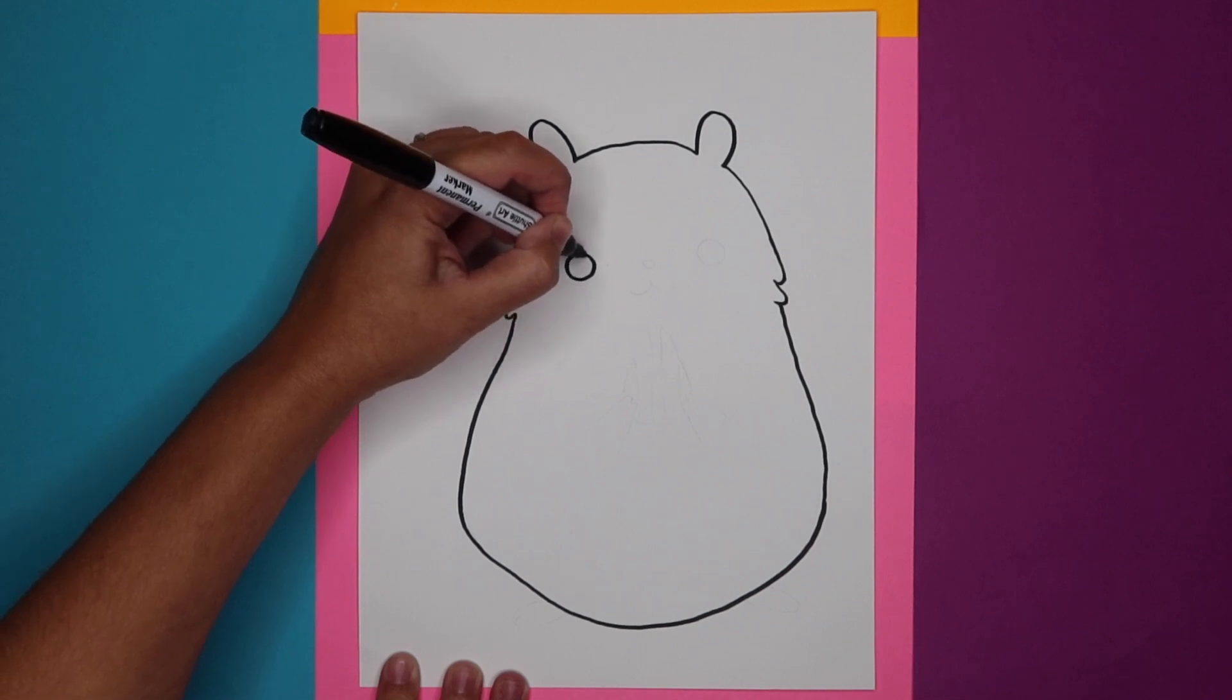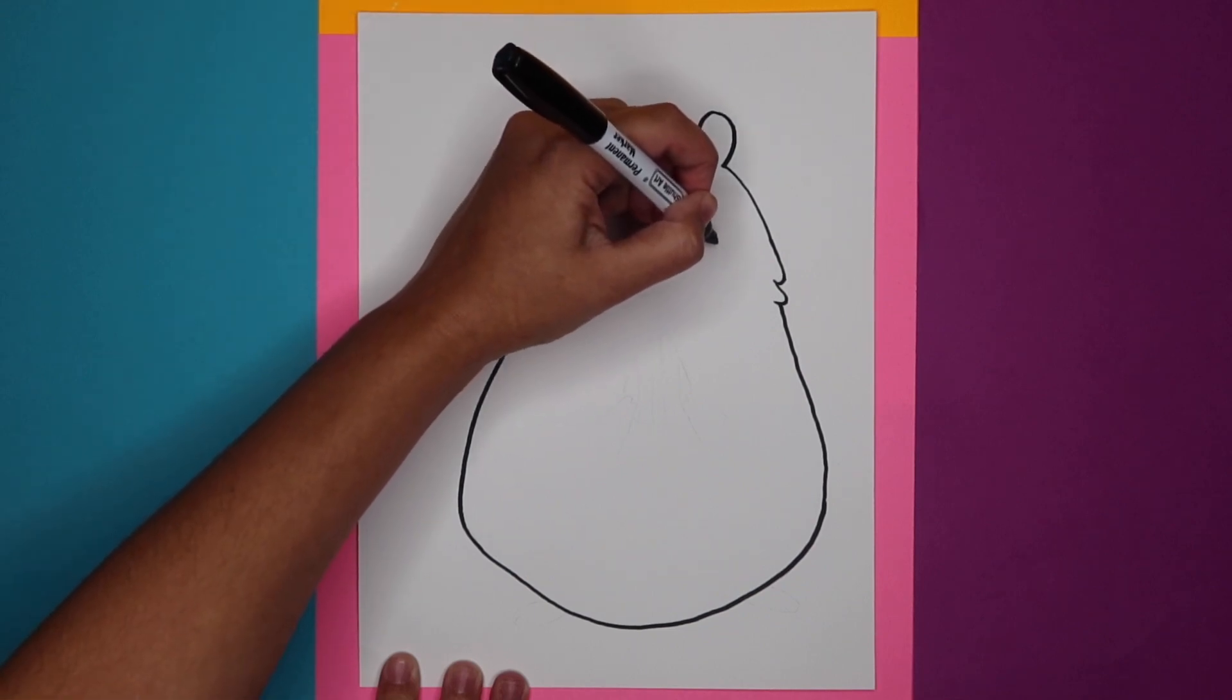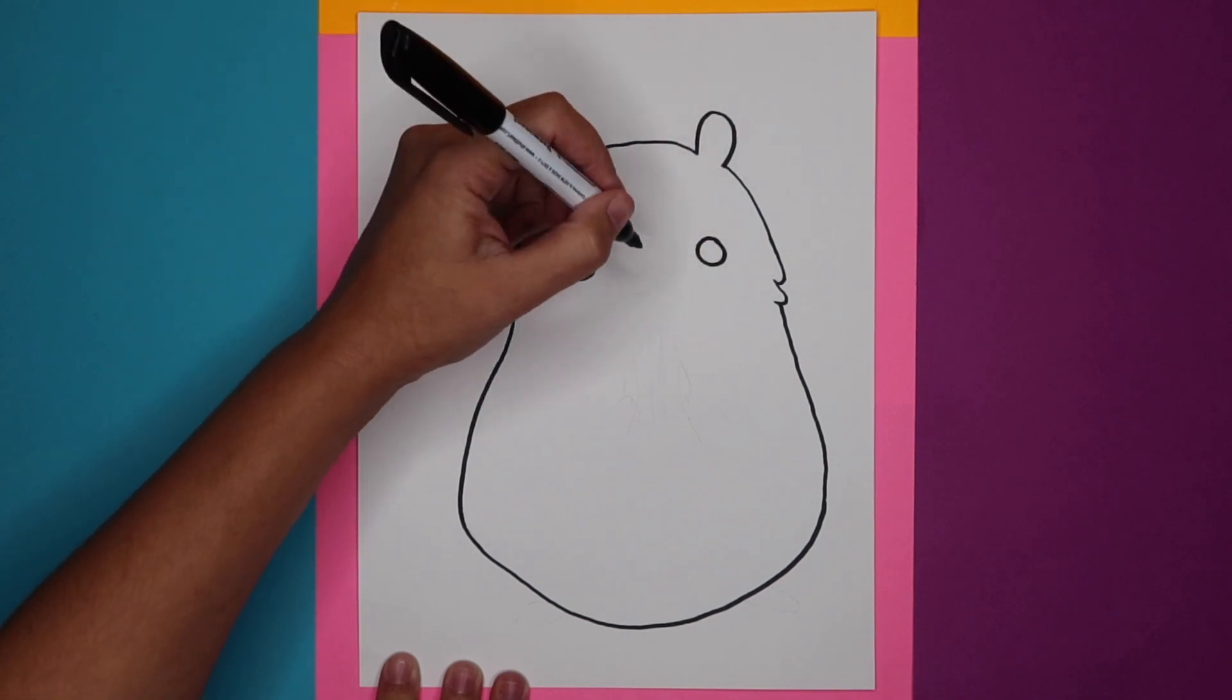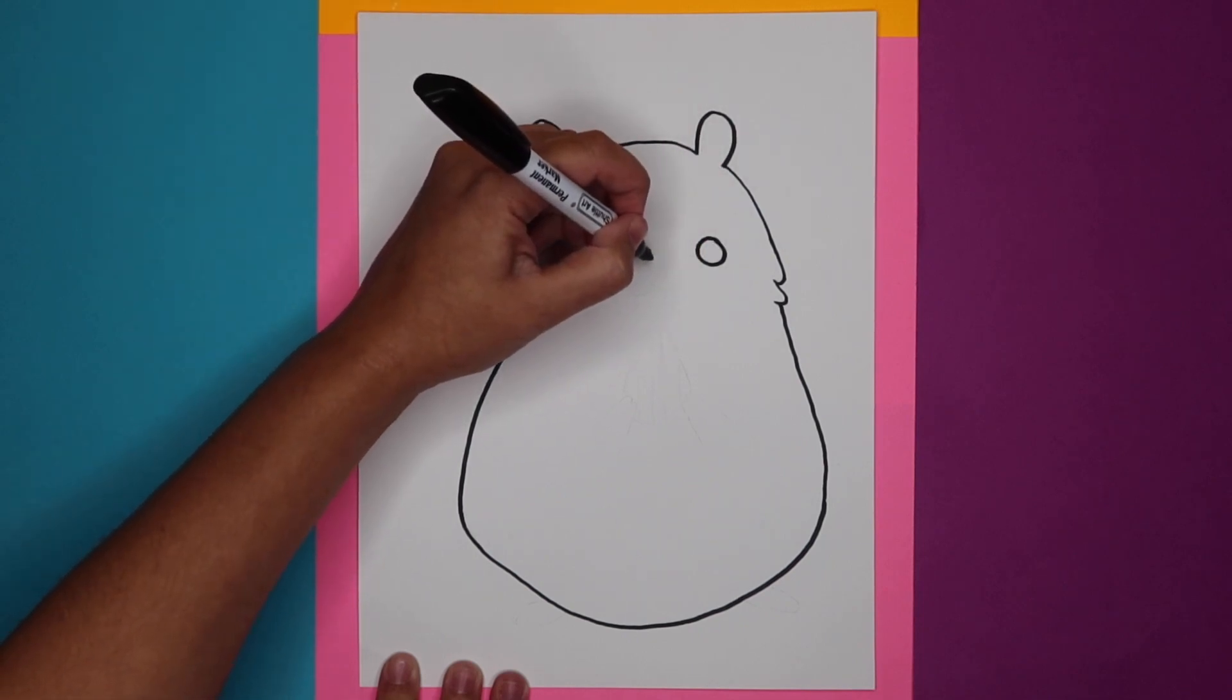A little circle here, another little circle. Alright, let's make the little nose, little oval shape.